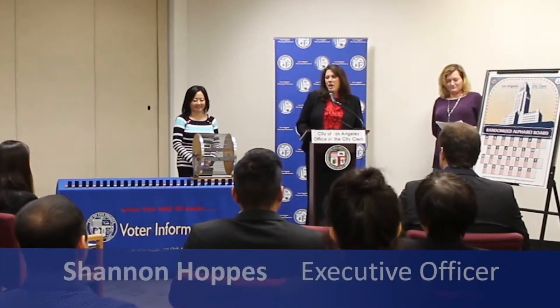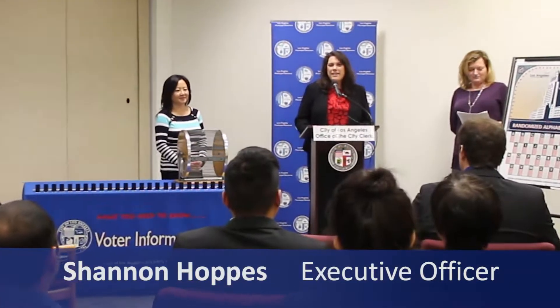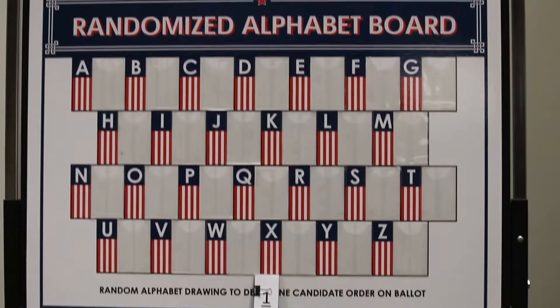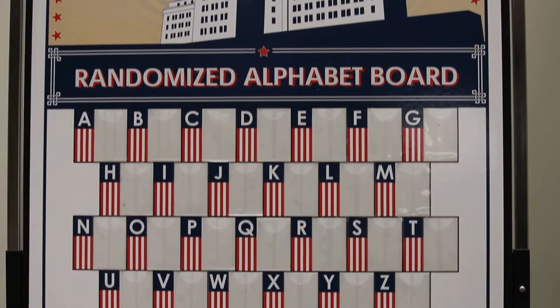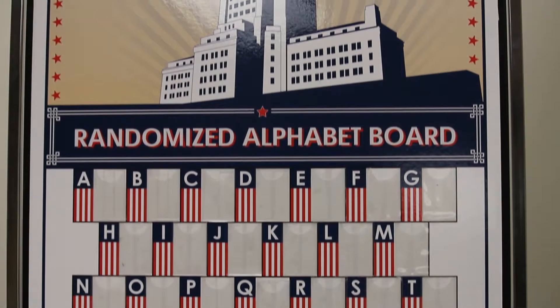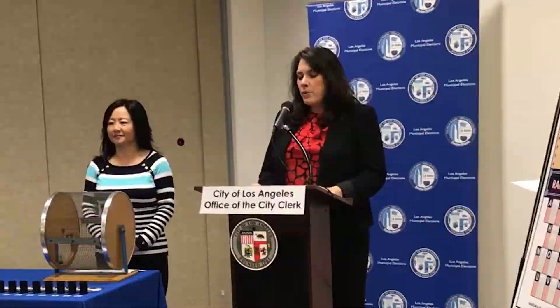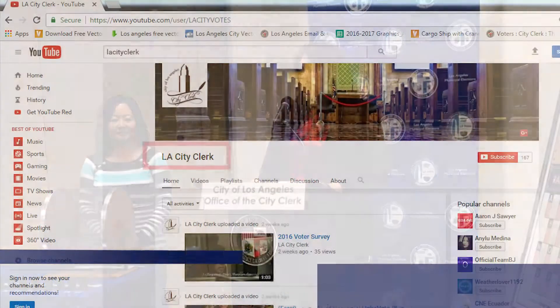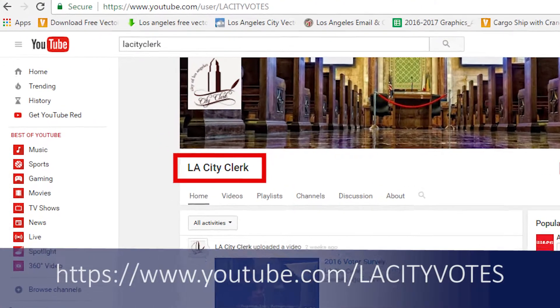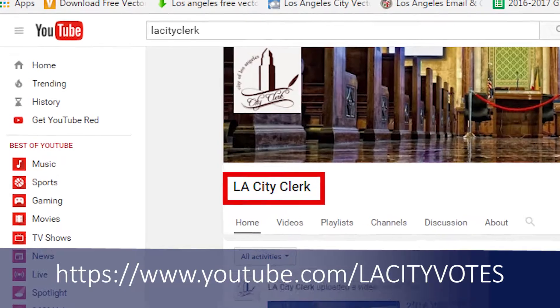Hello, my name is Shannon Hoppus. I'm the Executive Officer with the Office of the City Clerk. We are starting the Random Alpha drawing and this event is being recorded and it will be posted on the City Clerk's YouTube channel at LA City Clerk.